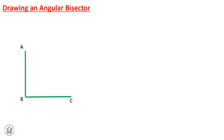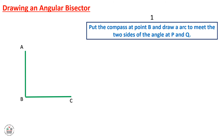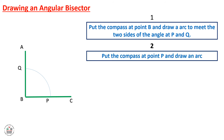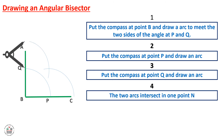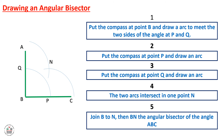Drawing an angular bisector. We will learn how to draw an angular bisector for any angle. Assume we have angle ABC. To draw the angular bisector for angle B, place the compass at point B and draw an arc meeting the two sides of the angle at P and Q. Keep the same opening distance and draw arcs from P and Q. The two arcs intersect at point N. Join B to N to get the angular bisector BN for angle ABC.